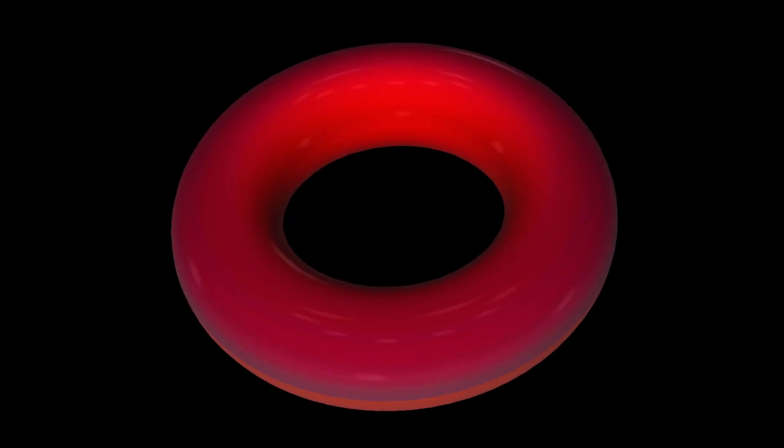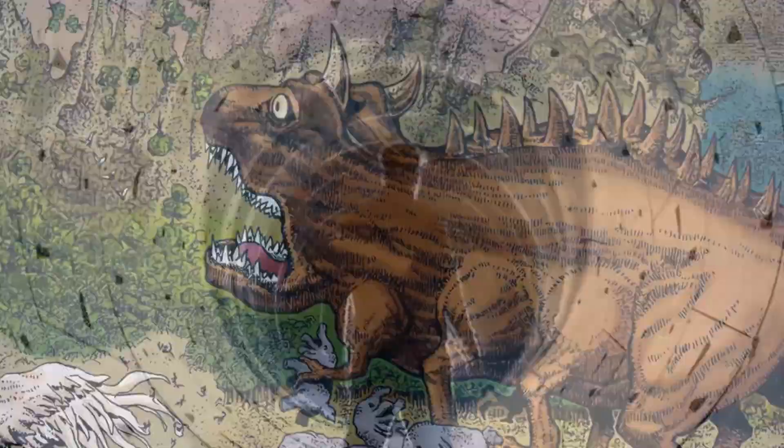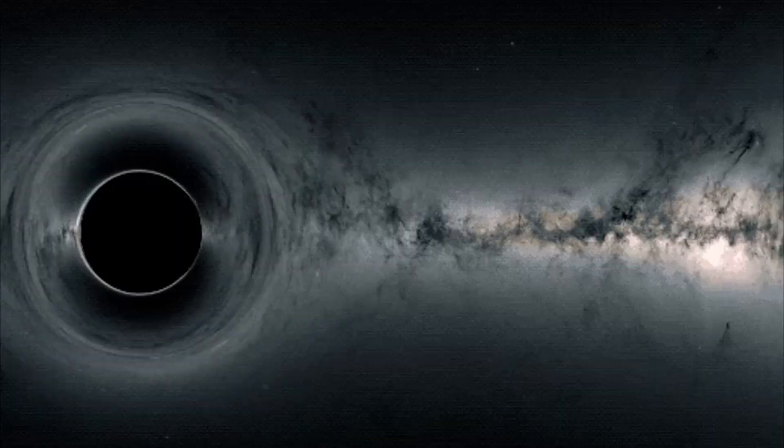Spinning black holes have a ring-shaped singularity. Some theories suggest passing through the ring could lead to another time or universe. But even if true, you would be shredded by gravity first.